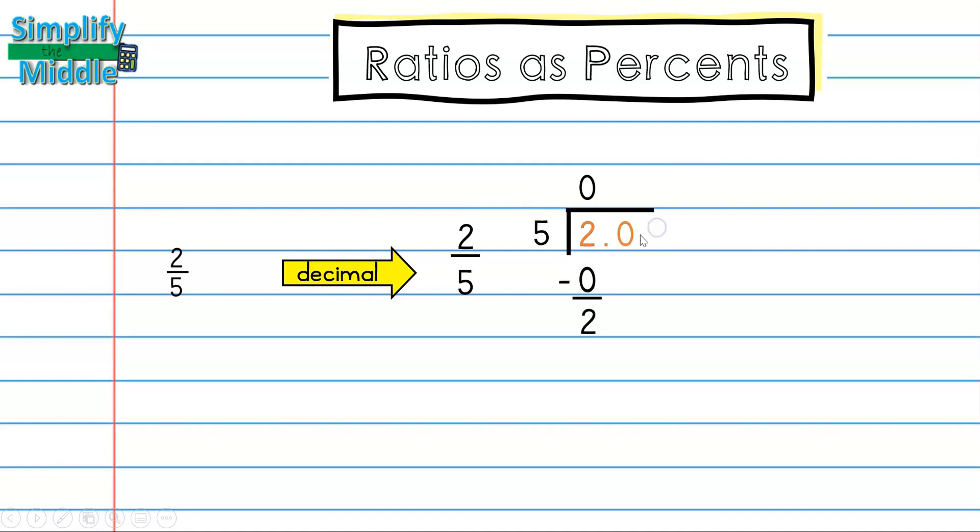And then we're going to bring down. To bring down, we had to add a decimal, so remember when you place your decimal inside the division house, you need to make sure that you also place your decimal in your quotient. Now I'm ready to bring down my zero. This time I can see 5 goes into 20 four times, so 4 times 5 is 20. When I subtract, I get zero for my remainder, so I'm done.